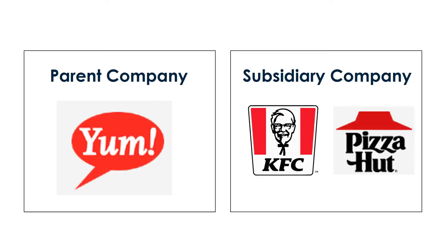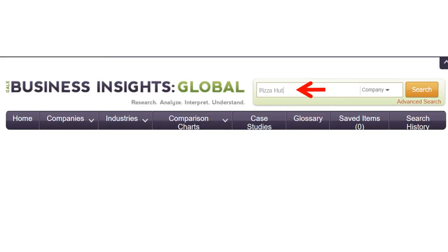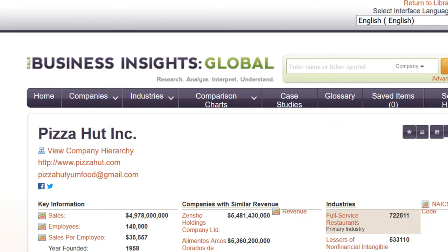First, determine if the company is a parent company or a subsidiary owned by a larger group. Not sure? Use Business Insights Global to search for the company and click on the company hierarchy.